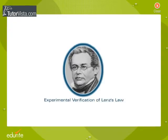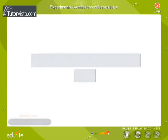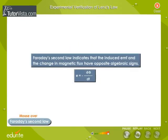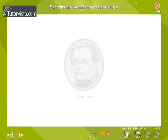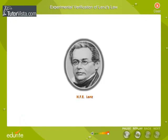Experimental verification of Lenz's Law. Faraday's second law indicates that the induced EMF and the change in magnetic flux have opposite algebraic signs. H.F.E. Lenz gave the correct physical interpretation of this law, and this interpretation is known as Lenz's Law.